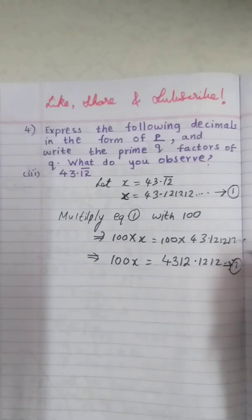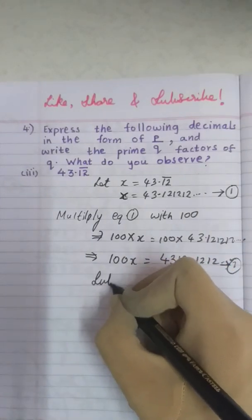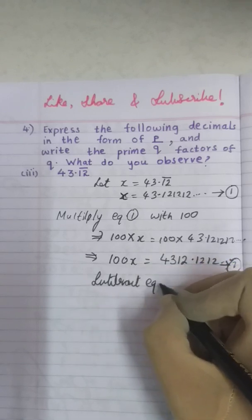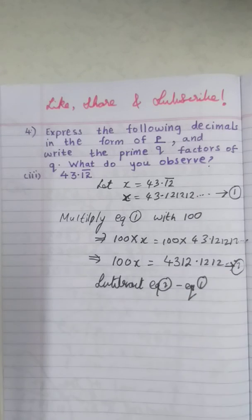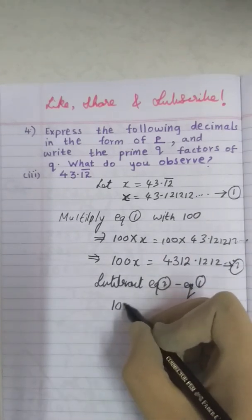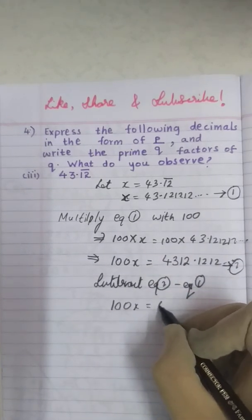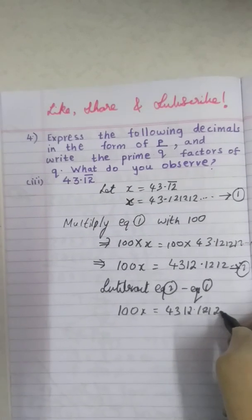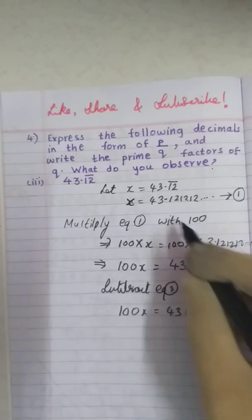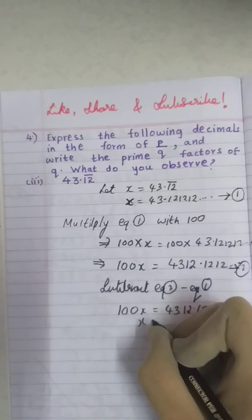So what is the next step? Remember we have to subtract equation 2 minus equation 1. The regular procedure which we did in class 9th and 8th that only we are following. So 100x is equals to 4312.1212 and so on. Then write the first equation below it.